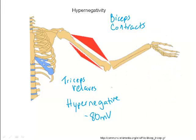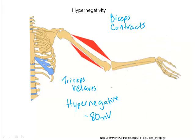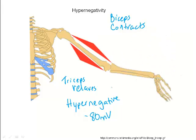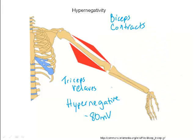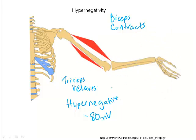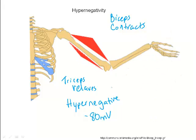In this video, we've looked at three neuron phenomena: saltatory conduction, all-or-none response, and hypernegativity. In the next video, we'll take a look at synaptic transmission.